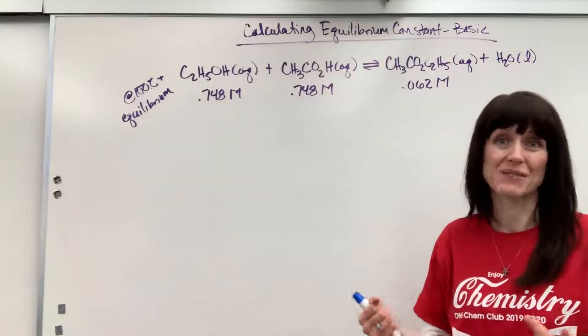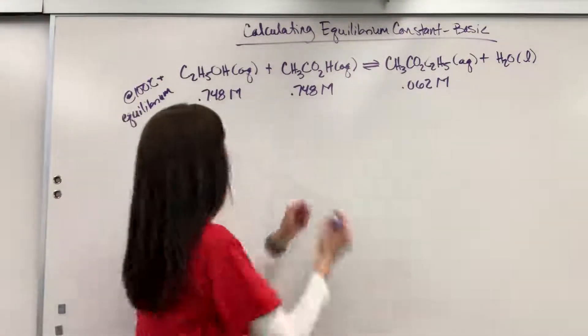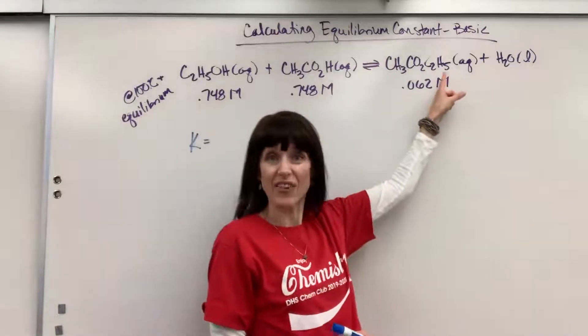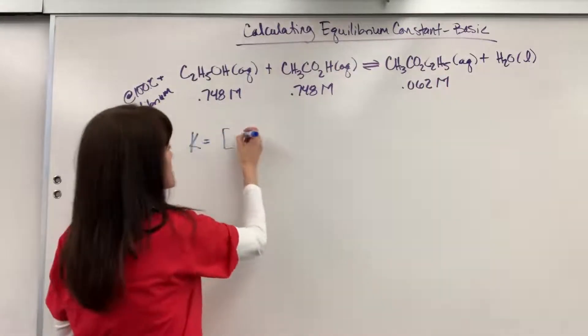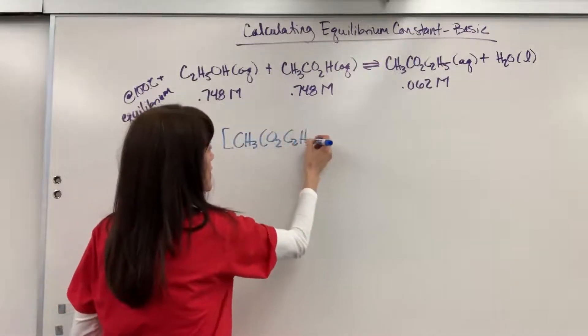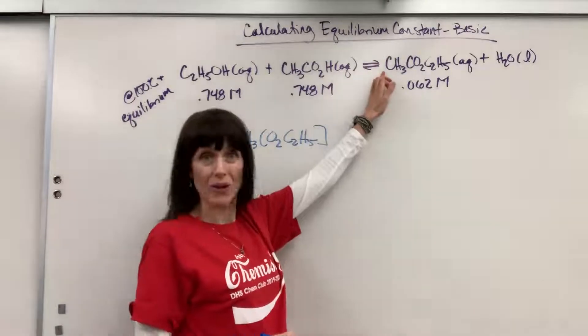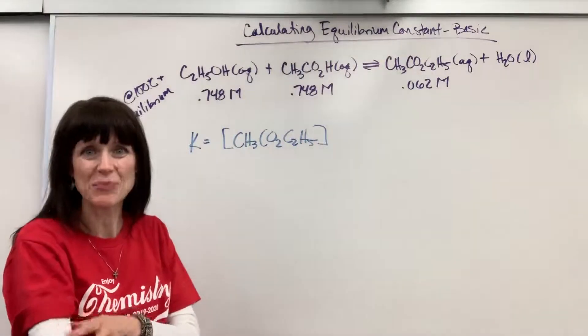Remember, that's just products over reactants. So K equals, we're going to have the products. Notice that this ethyl acetate is what that's called. It's aqueous, so I put that in brackets. CH3CO2C2H5. It's understood to be a one coefficient, so that's understood to be a one exponent. I'll leave it blank, we'll know it's one.